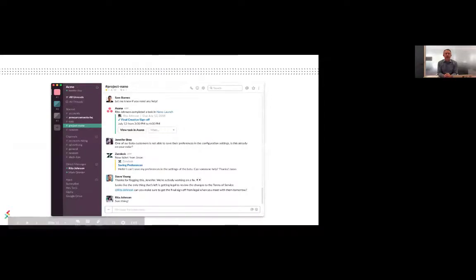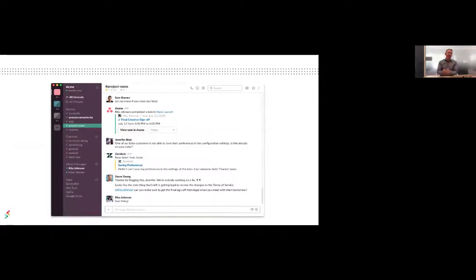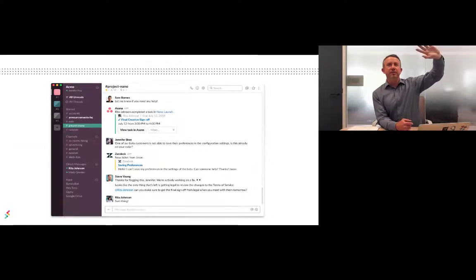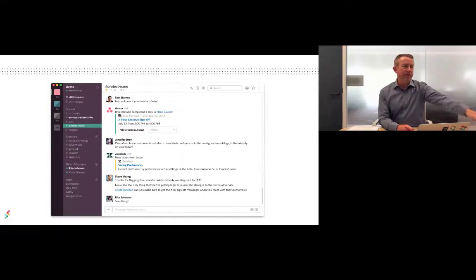This is a team working inside of Slack. They're working on a channel called Project Nano. They're working on the Nano project. Midway through the stream of conversations that's been happening, you'll see that there's an Asana has pushed in a notification about a task that Rita's been working on. Jennifer pipes in. There's another new ticket coming in from Zendesk, which is a customer service application. Steve, midway through the conversation, says, looks like the only thing that's left is getting legal input to review the changes to the terms of service. Rita, can you have a look at this? Rita says, sure thing.